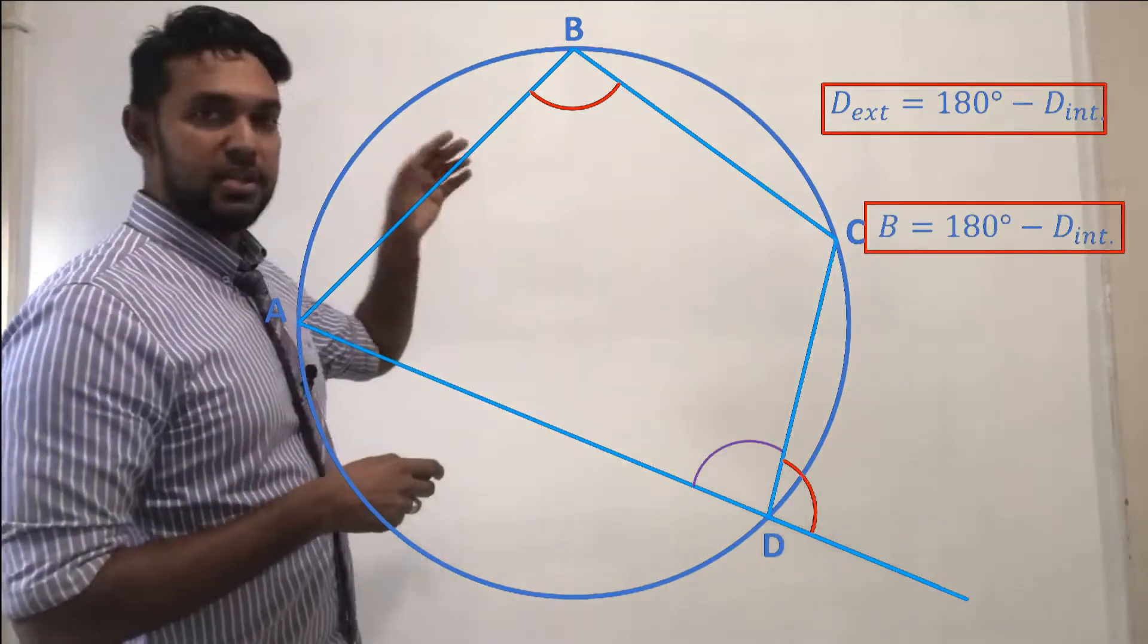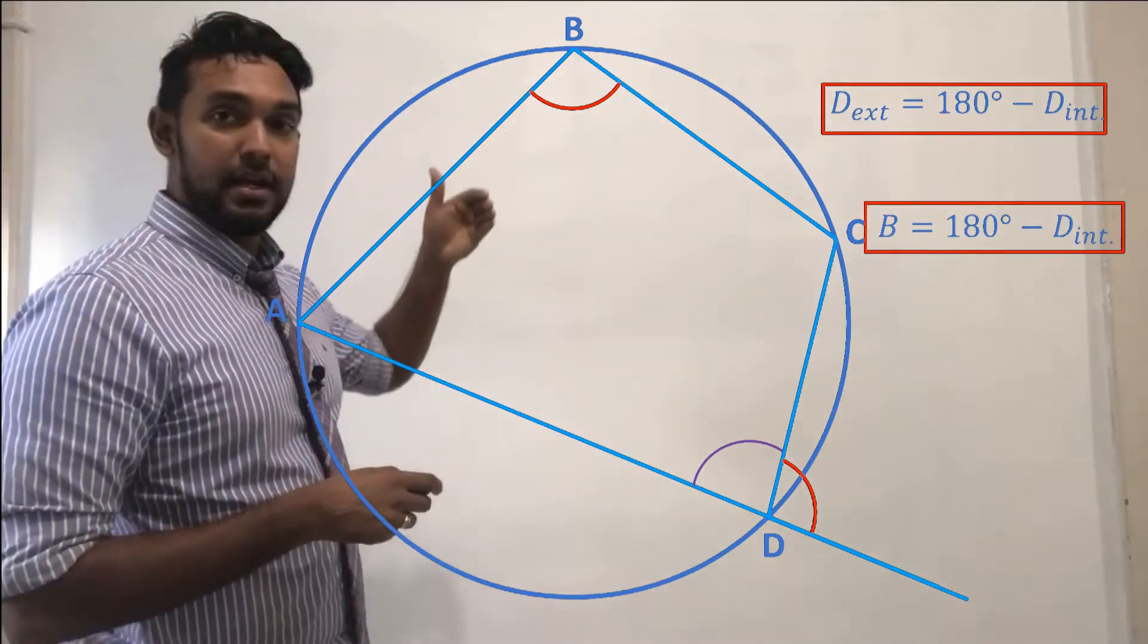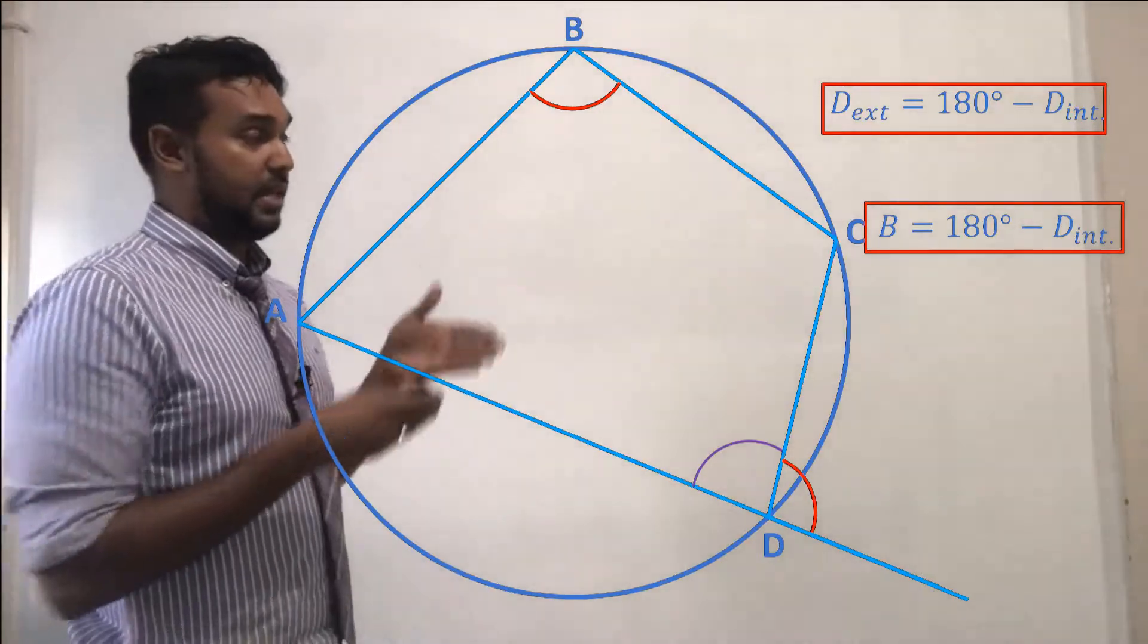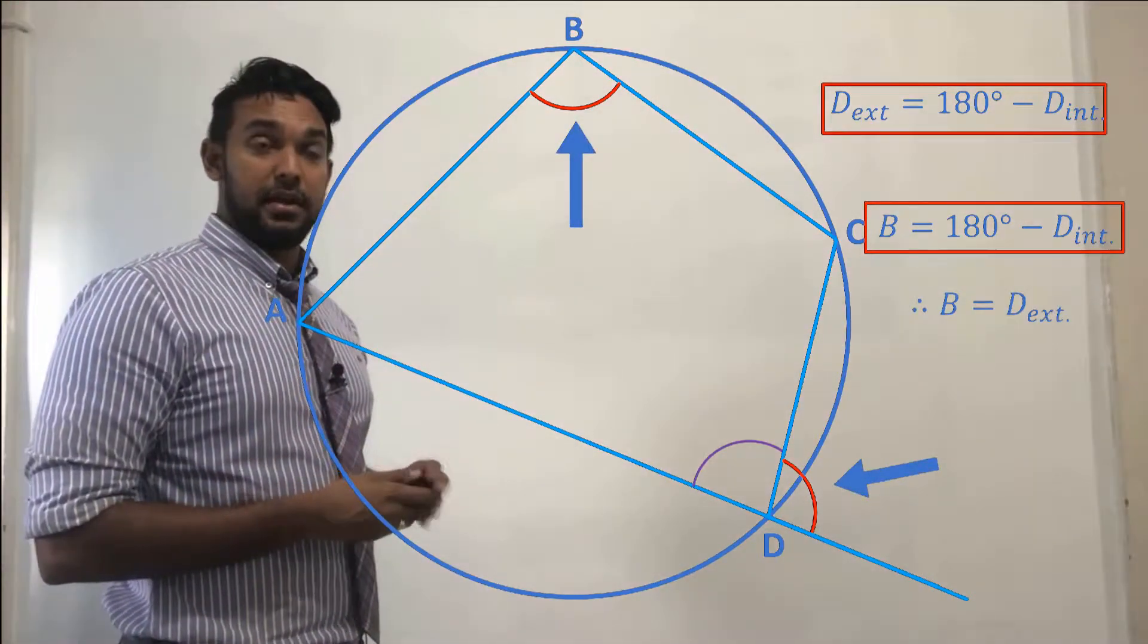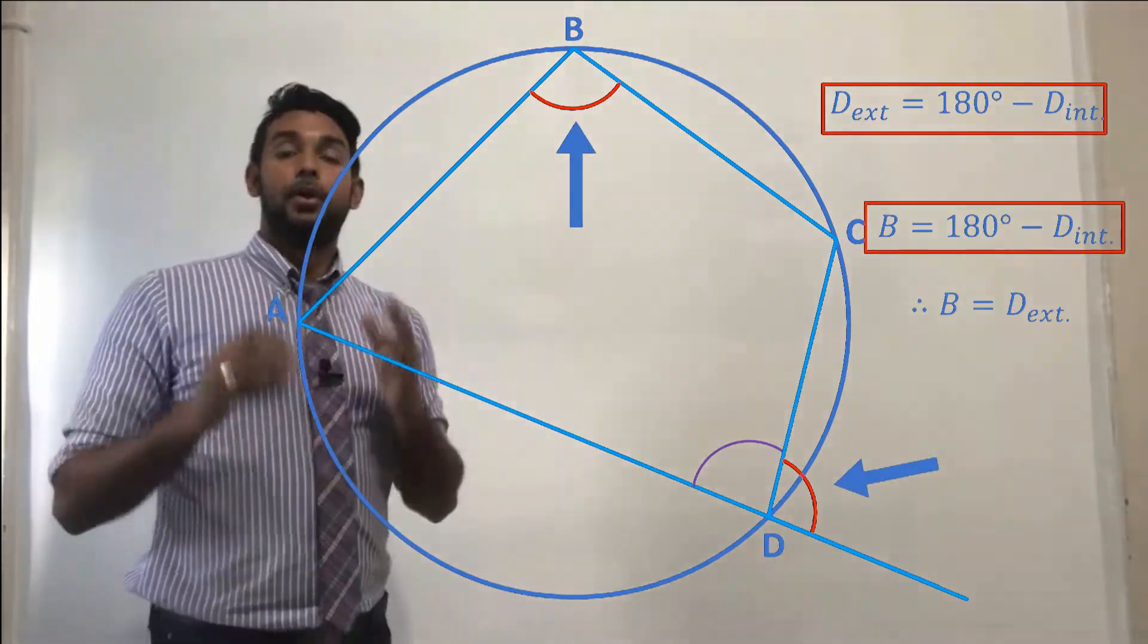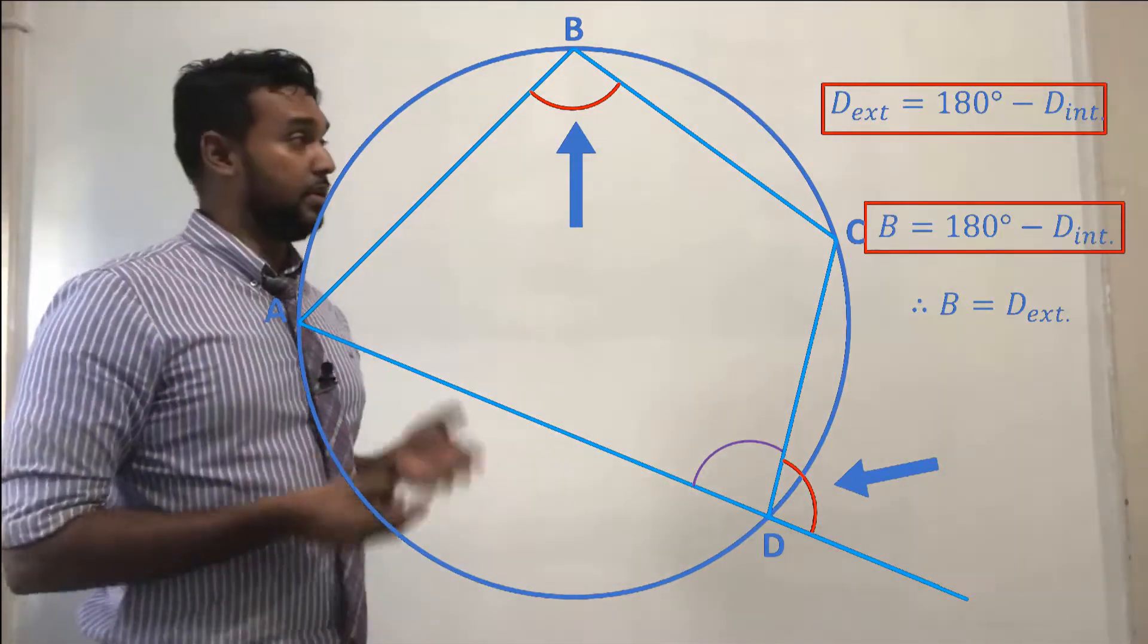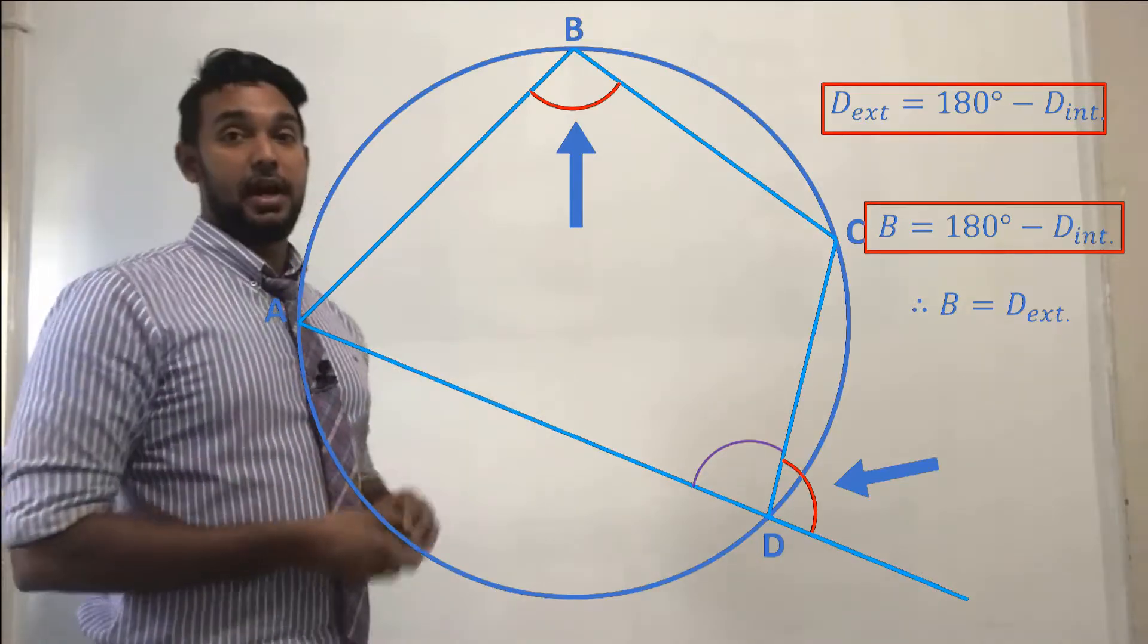Now, look at that. The equations for both the external portion of D and for angle B, they're the same, which means that B is equal to the external angle outside of D, which shows that the external angle of a cyclic quadrilateral is equal to the interior opposite angle.